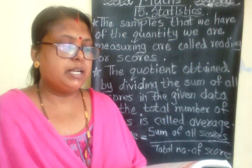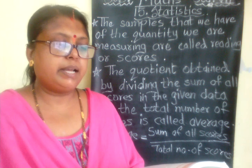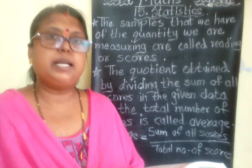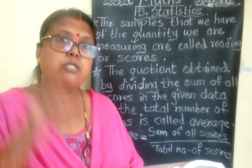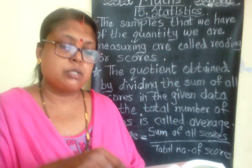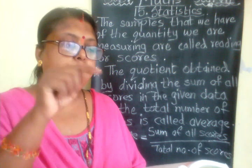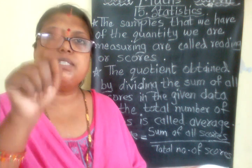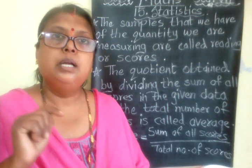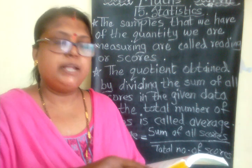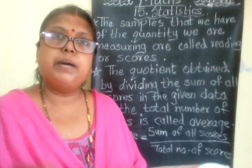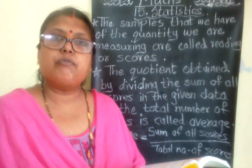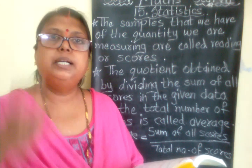The numbers given are 9, 11, 8, 20, 10, 16, and 12. These are the scores, and there are 7 of them. So we will find the average by adding all these numbers and dividing by 7, which will give us the average rainfall for that week.